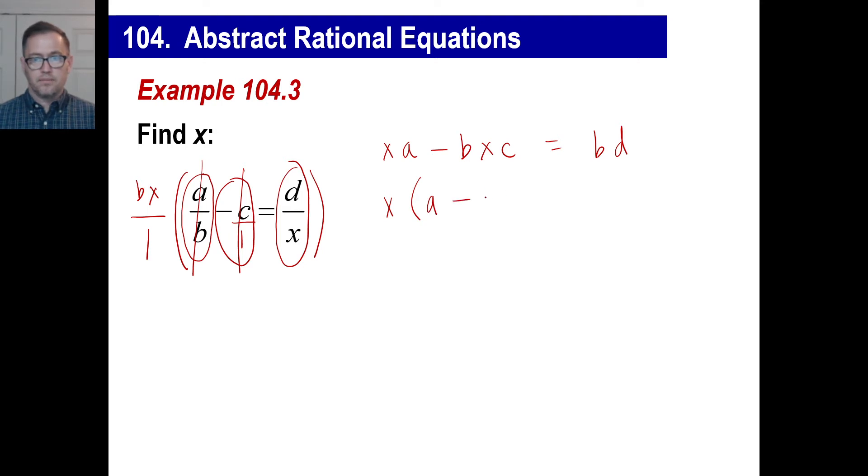A is the first one. Minus what? BC. There we go. Okay. That equals B times D. All right. There's one last step to do. What is it?